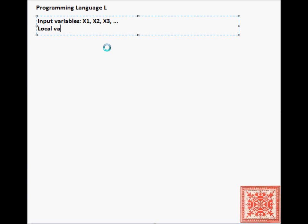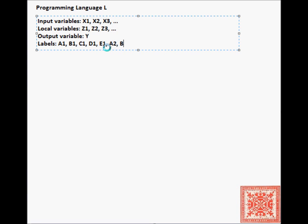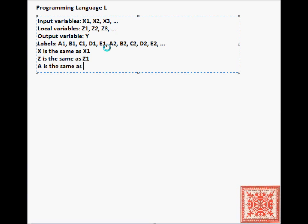Programming language L has input variables denoted by X's with subscripts, local variables Z1, Z2, Z3, and a unique output variable Y. There are labels A1, B1, C1, D1, E1, then A2, B2, C2, D2, E2, and so forth up to infinity. If the subscript is omitted, it's the same as the subscript of 1. So X is the same as X1, Z is the same as Z1, A is the same as A1, and so forth.